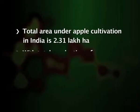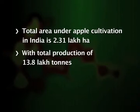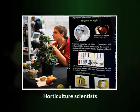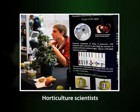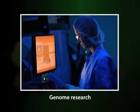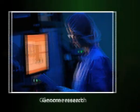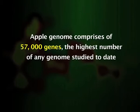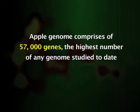The total area under apple cultivation in our country is 2.31 lakh hectares with a total production of 13.80 lakh tons and a productivity of 6.0 tons per hectare. Recently in 2010, the complete genome of apple was decoded by an Italian-led consortium in collaboration with horticulture genomicists at Washington State University using the Golden Delicious variety. The apple genome comprises 57,000 genes — the highest number of any genome studied to date. Understanding the apple genome will help scientists identify suitable genes for disease resistance and quality improvement, besides unraveling the ancestry of domestic apple.